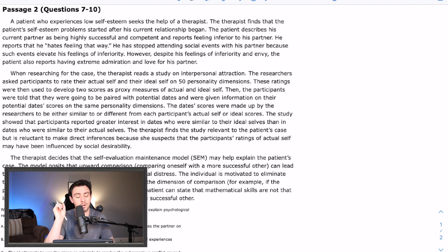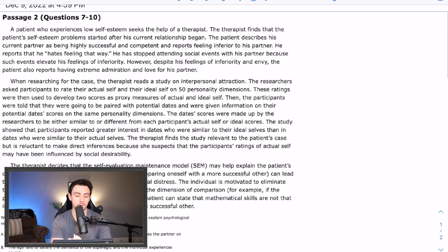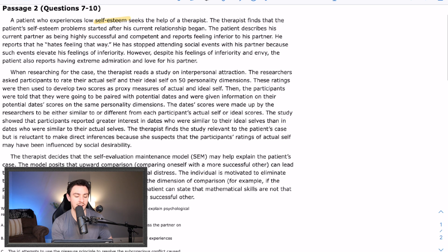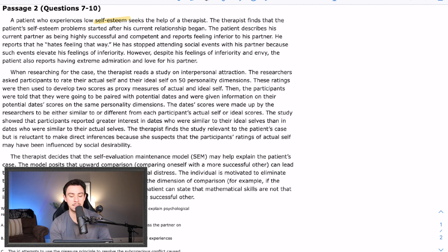So let's take a look at the passage. Jumping into this passage, we're going to flow chart out everything, highlight the basic sciences, write out the relationships, and then we're going to take these questions one at a time. So it says a patient who experiences low self-esteem. So right out of the gate, we have a term that we learned in our MCAT prep, and that is self-esteem. It's the idea of how you view yourself. Seeks the help of a therapist. Therapist finds that the patient's self-esteem problem started after his current relationship began. Patient describes his current partner as being highly successful and competent and reports feeling inferior to his partner. He reports that he, quote, hates feeling that way.